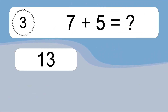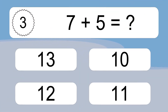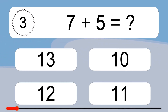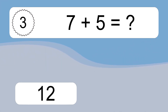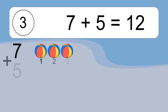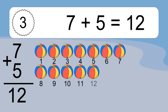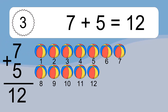7 plus 5 equals what? 7 plus 5 equals 12. Let's count it. 1, 2, 3, 4, 5, 6, 7, 8, 9, 10, 11, 12.